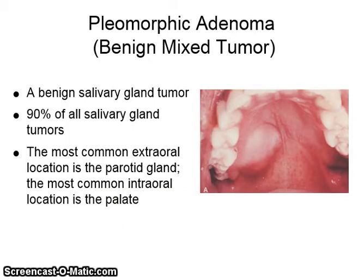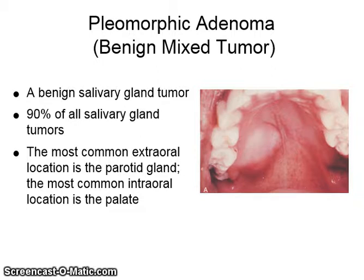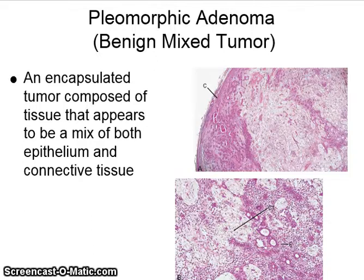Pleomorphic adenoma is a benign mixed tumor. It comprises 90% of all salivary gland tumors. The most common extra-oral location is the parotid gland, and the most common intra-oral location is the palate. Microscopically, it is an encapsulated tumor composed of tissue that appears to be a mix of both epithelium and connective tissue.